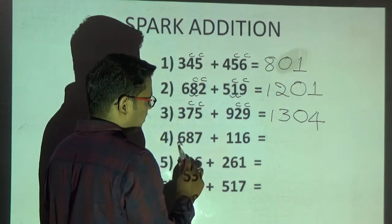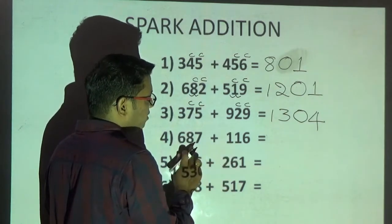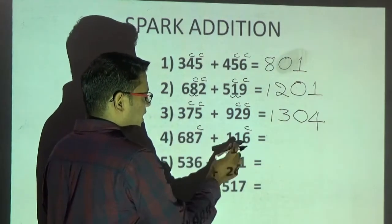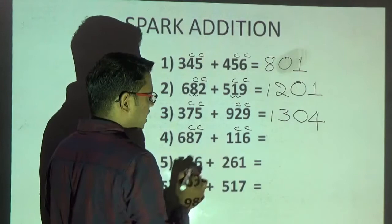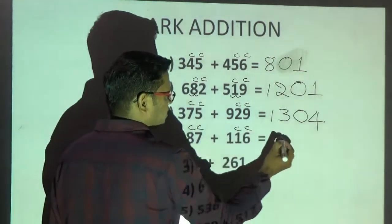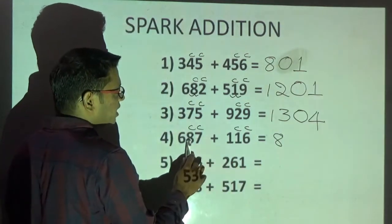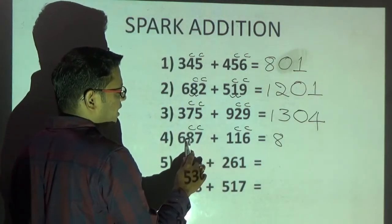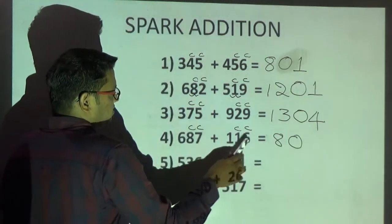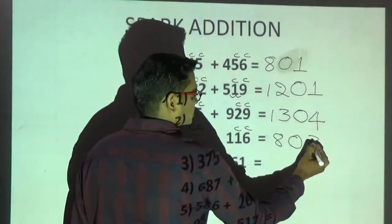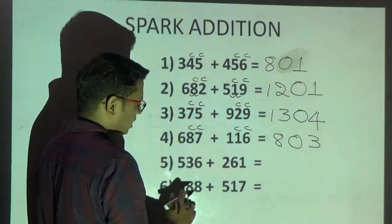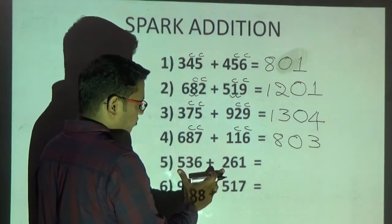Next problem: 6 plus 1 is 7. 8 plus 1 is 9 — whenever you get 9, be careful and observe the next digit. 6 and 7 is going to generate carry, therefore 8 and 1 also generate carry. 6 plus 1 is 7 — since next digit generates carry, 7 becomes 8. Then 8 plus 1 is 9 — next two digits generate carry, 9 becomes 10, write end digit 0. 6 plus 7 is 13, write end digit. Answer for this question is 803.